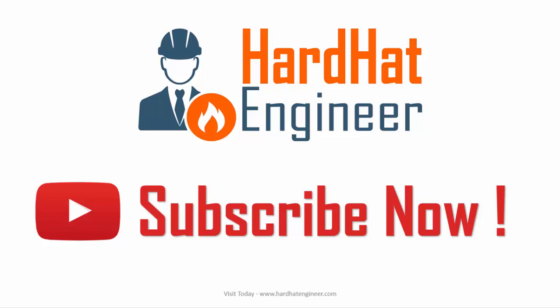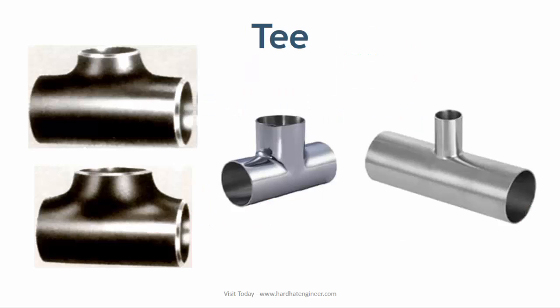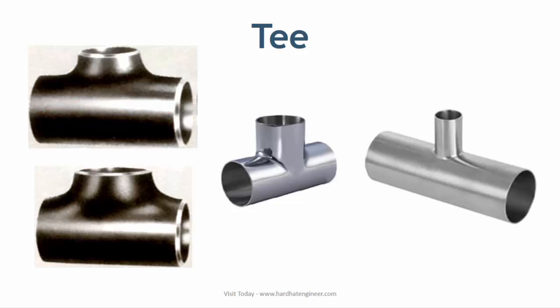Let's start with T. There are two types of T used in piping. First is equal or straight T. In this type of T, the diameter of the branch is the same as the diameter of the run pipe. The run pipe is the main line in which the T is installed. The second type of T is reducing T, where the diameter of the branch size is smaller than the diameter of the run pipe.